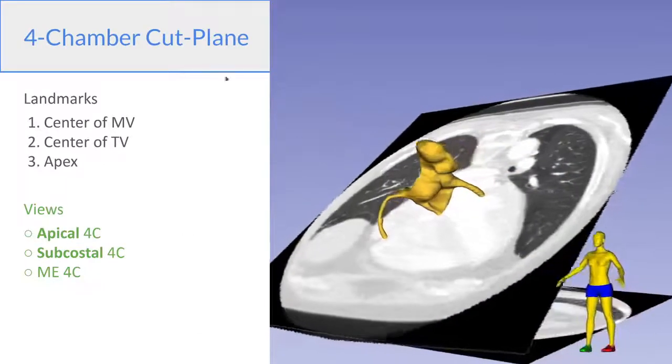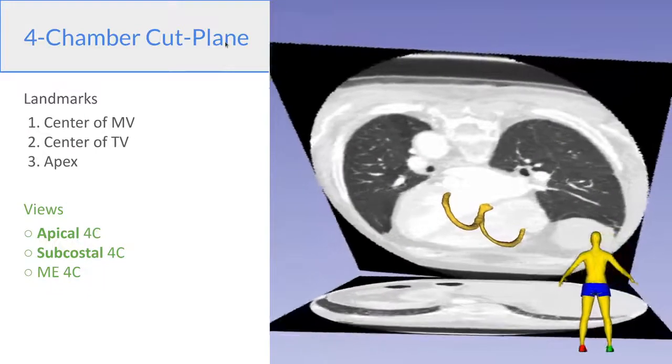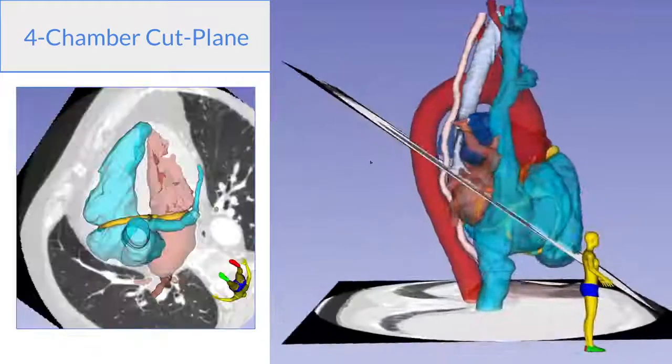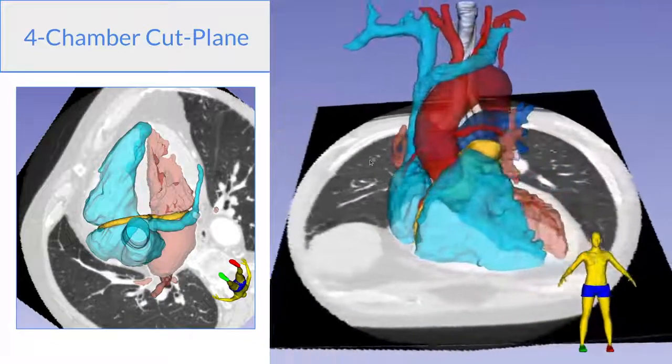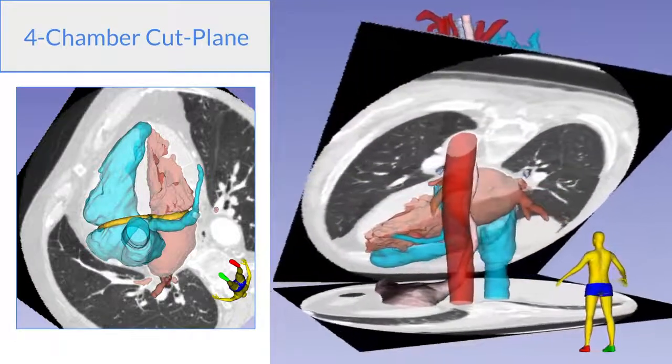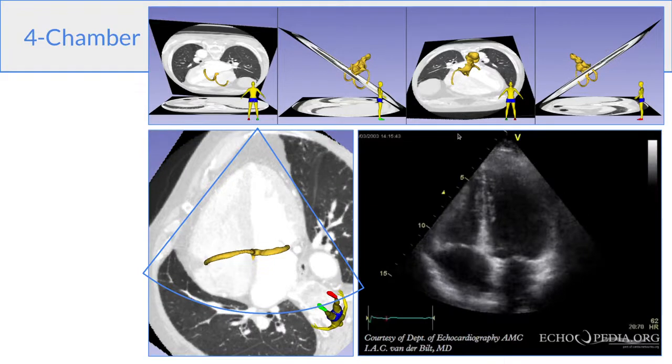Looking at the four-chamber cut plane now, the three landmarks would be the center of the mitral valve, the center of the tricuspid valve, and the apex. And we can look at this cut plane from the apical window or the subcostal window. So here's the same cut plane visualized on a CT with all the structures showing. And on the left, an on-fast view of the cut plane oriented to correspond to the apical four-chamber view. So you can see the apical four-chamber view on the right and the corresponding CT on the heart base embedded in it on the left. Take a note of the orientation figure there. So we're looking from below in the standard TTE view.